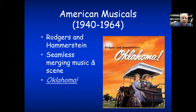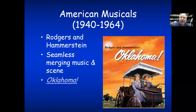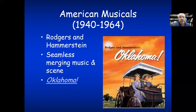The golden age of American musicals was considered to be from 1940 to 1964, starting really with Oklahoma and going all the way to Fiddler on the Roof. Rodgers and Hammerstein were a big duo. They did Oklahoma, South Pacific, Flower Drum Song, The King and I — big, big shows. Oklahoma was really considered the first truly seamless merging of music and story.